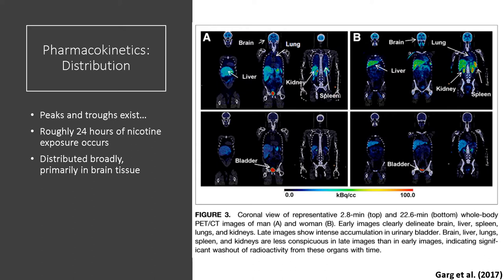These PET CT images by Gard and colleagues show healthy individuals injected with radio-traced nicotine. In the top images, in the early phase, organs that accumulate nicotine include the brain, the liver, the spleen, the lungs, and the kidney. In the later phases, in the bottom, some of that nicotine remains in those organs but not as intensely — the bulk is found in the bladder thereafter. This segues nicely into the metabolism and elimination portions of pharmacokinetics.